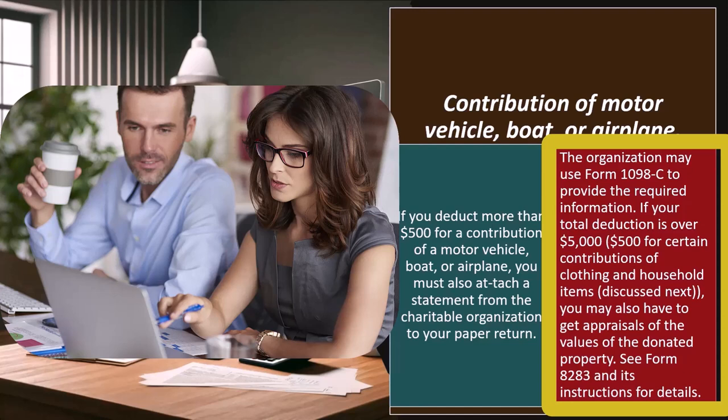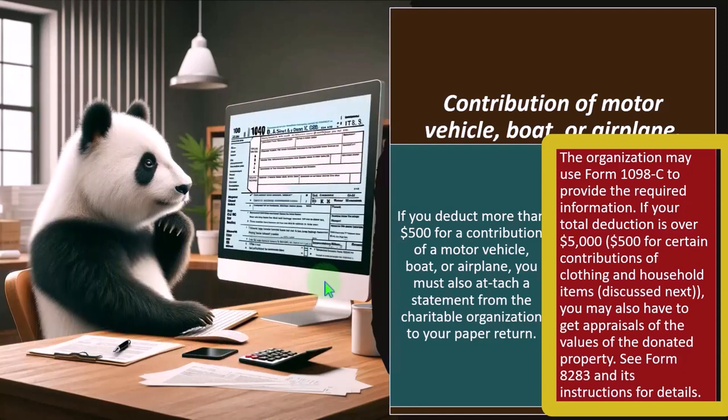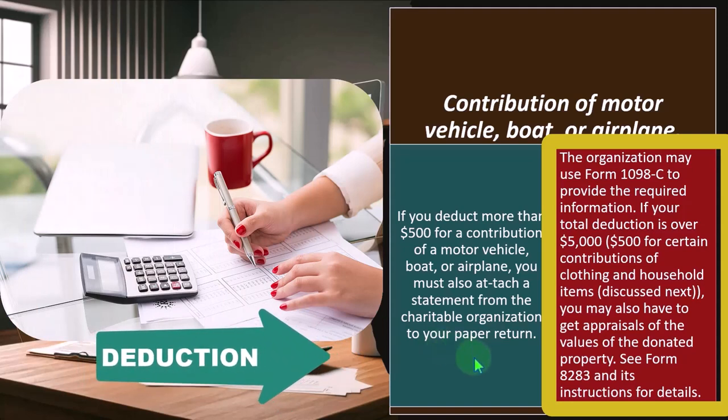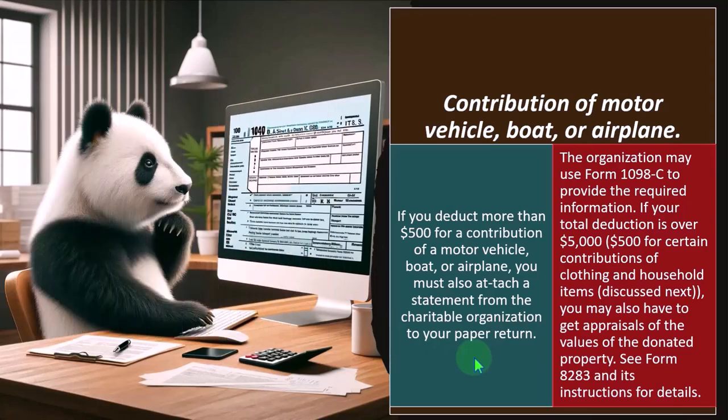When you get into valuation of the thing being given, it's easy to try to say you overvalued it. To stop people from overvaluing something like a car, boat, or airplane, we can force them to get an appraisal — similar to a home appraisal, where a third party comes in and gives an accurate valuation of the property. Even that is difficult, because the third-party appraiser could lean toward the high end of the appraisal, knowing the person wants a high value to get a larger deduction. You can see Form 8283 and its instructions for details if that applies to you.